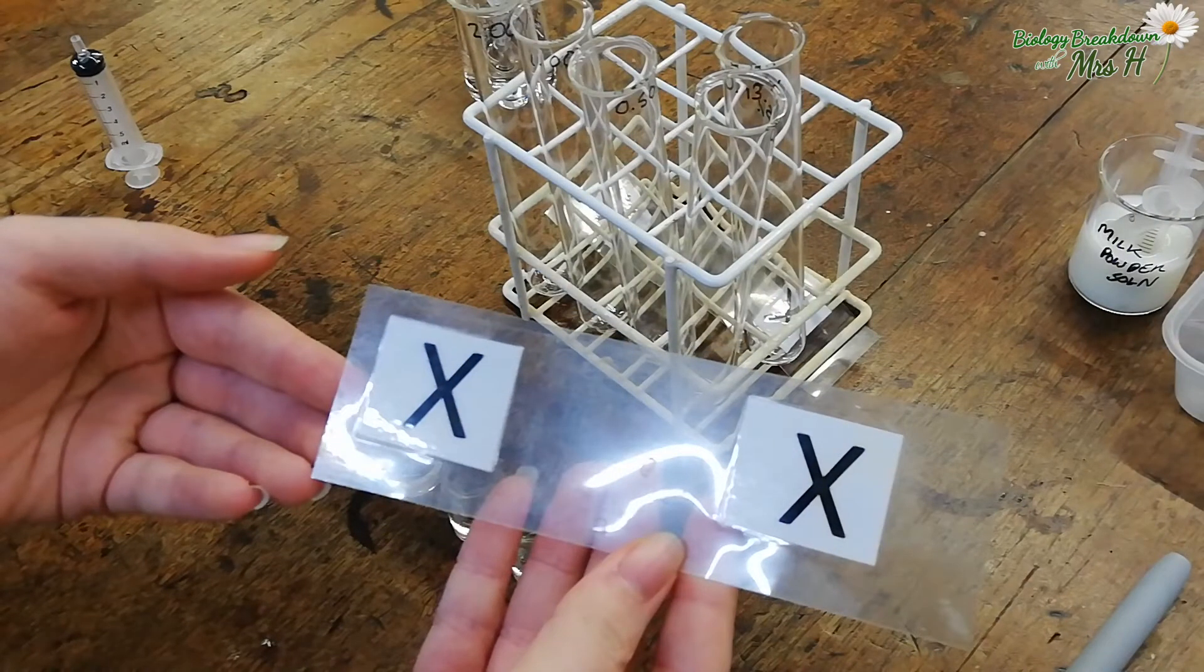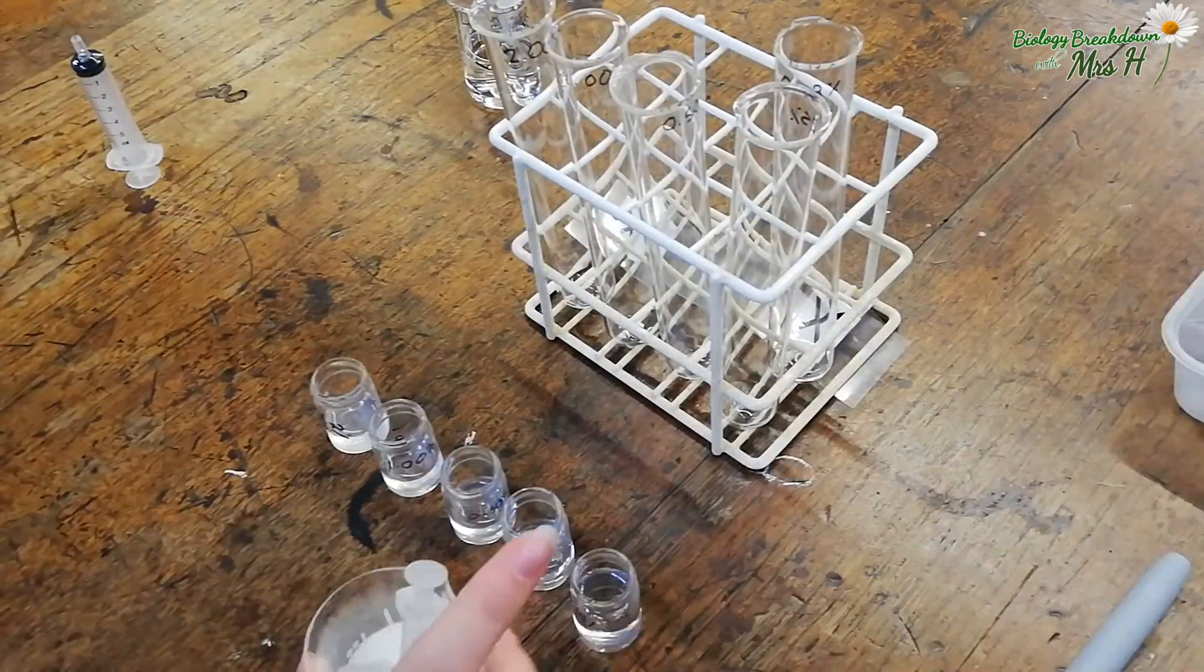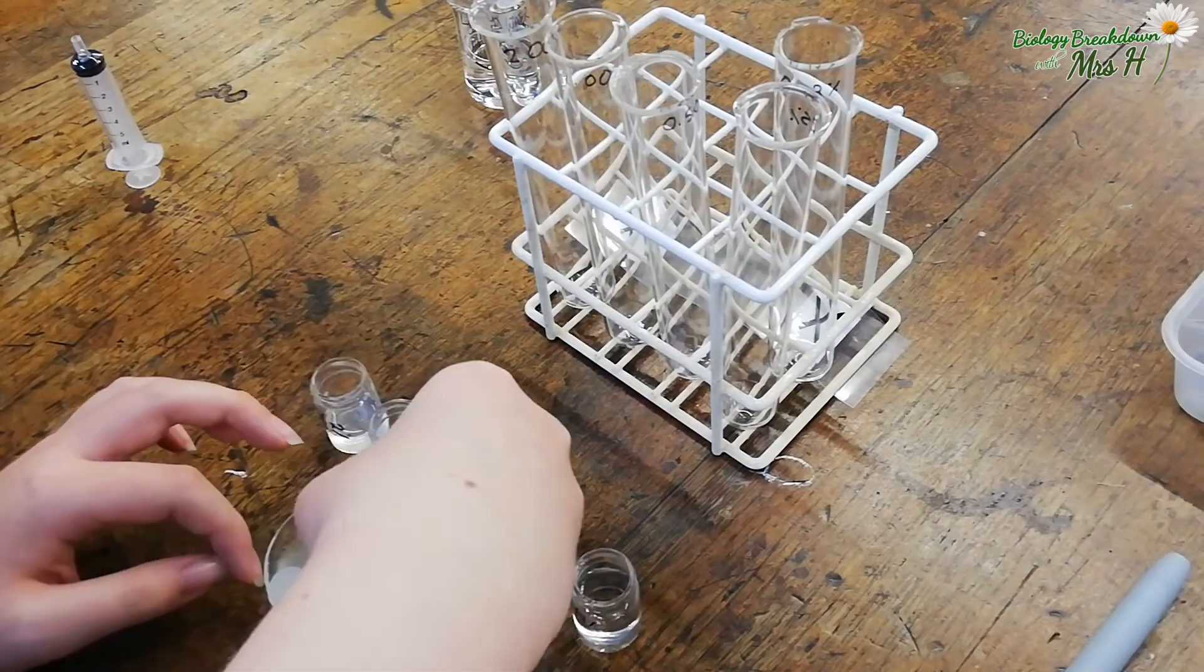Place this cross under the boiling tube in the rack then get all of your boiling tubes ready by adding 2 cm³ of milk to each one.